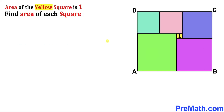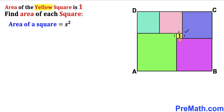Let's recall the area of a square formula: area equals s squared, where s represents the side length of a square. Now let's focus on this yellow tiny square — its area is one, so that means each side of this tiny square is going to be one unit.